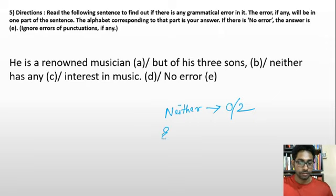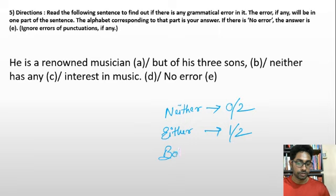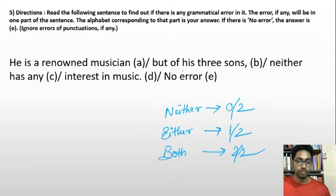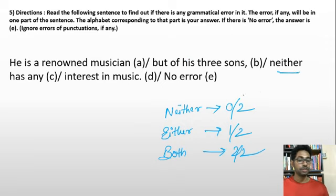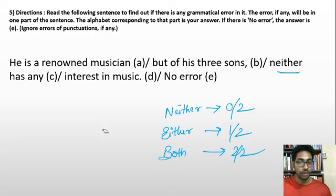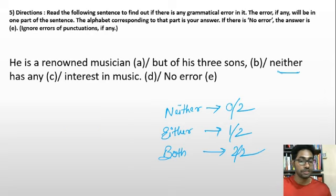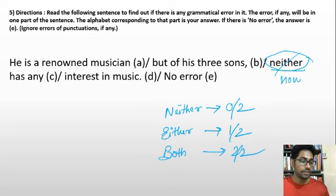Here there are three sons. Neither, either, and both always work between exactly two. Not less than two, not more than two — always two. So since there are three sons, 'neither' is incorrect. It should be 'none.' 'None has any interest in music' is correct. Option C is the answer. A straightforward question.